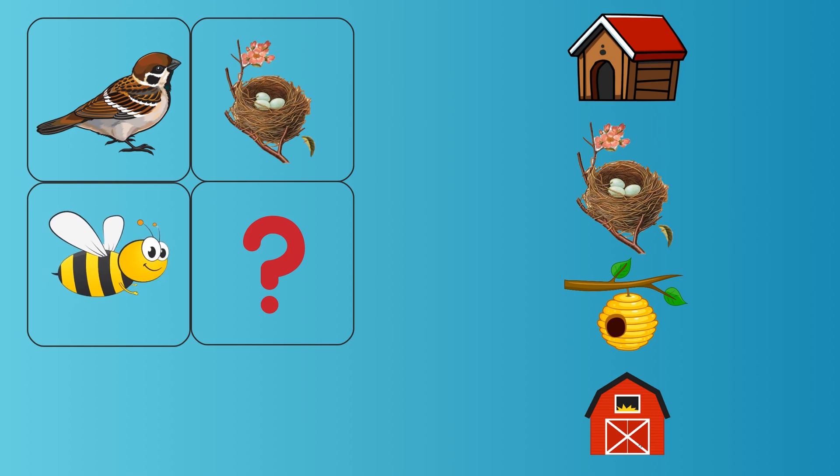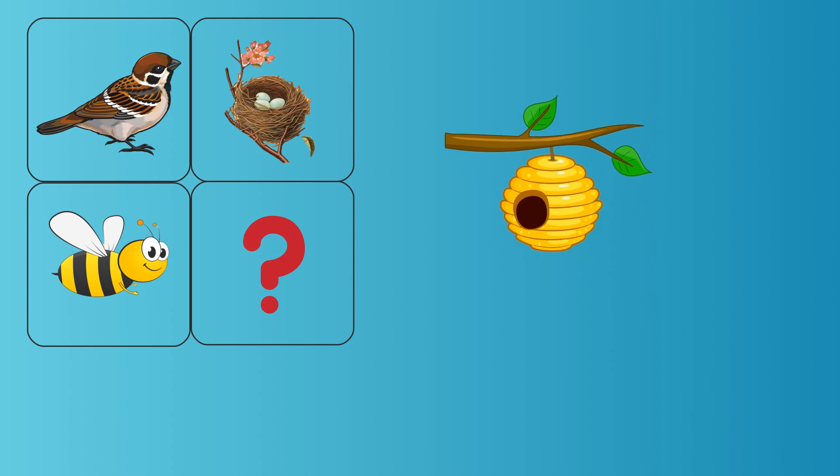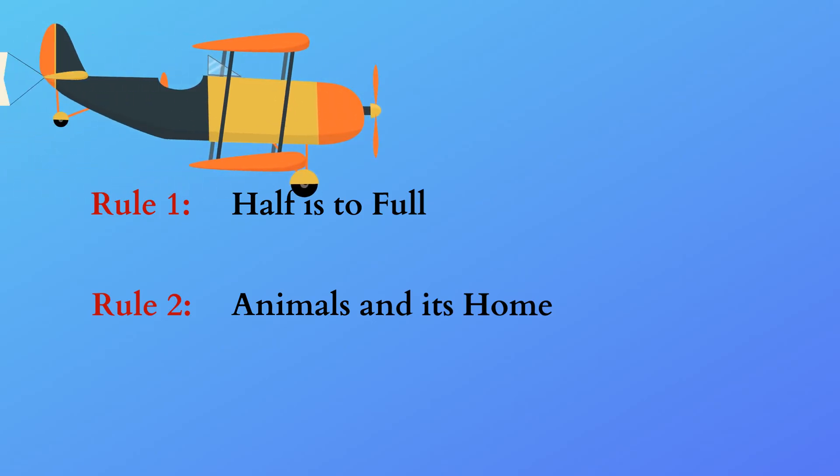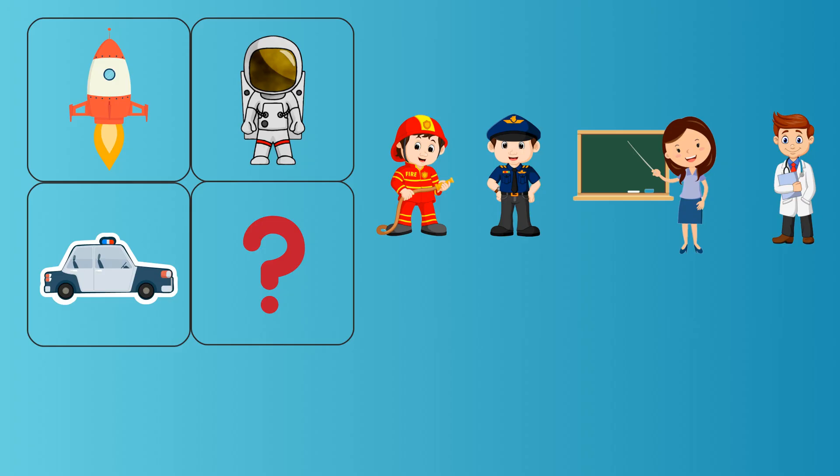Rule three: workers and the vehicles they use. In this question, the first picture is a rocket and the second picture is an astronaut. How are they related? The astronaut travels to space in a rocket. Let's apply the same rule to the bottom set. Who uses a police car? A policeman who drives the police car.